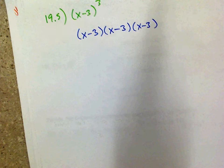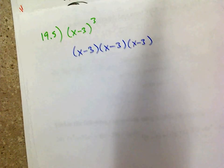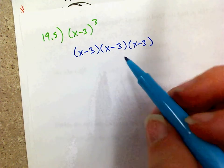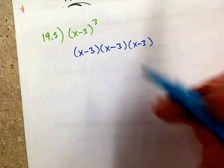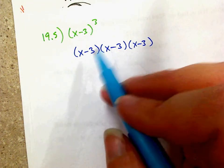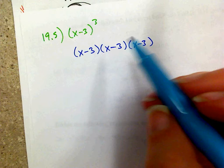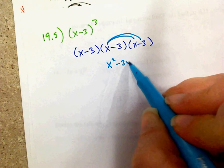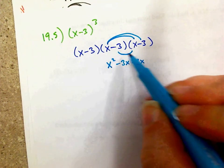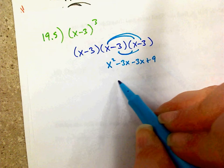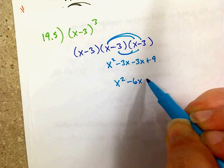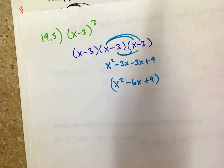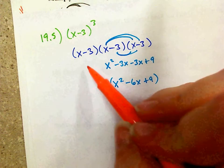It's a matter of preference whether you multiply the first two together or the last two. I personally prefer to do the second and third ones first, so then I just distribute a binomial instead of a trinomial. x times x is x squared, x times negative 3 is negative 3x, negative 3 times x is negative 3x, and negative 3 times negative 3 is positive 9, which leaves x squared minus 6x plus 9.